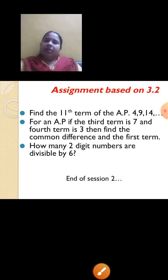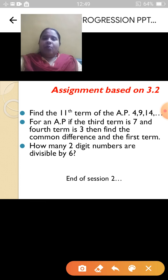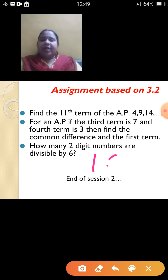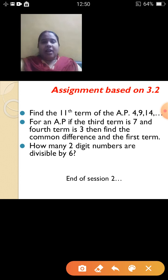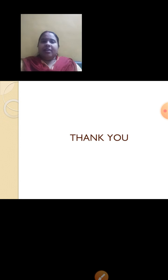With this we come to an end of this session, where we have done several important sums. I have prepared assignment questions — please do them sincerely on your own. The last one: how many 2-digit numbers are divisible by 6? The first 2-digit number divisible by 6 is 12, then 18, and so on. Find the last such number and apply the same method. We will continue in the next session. Thank you.